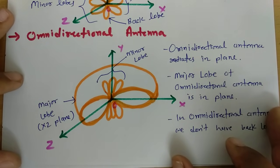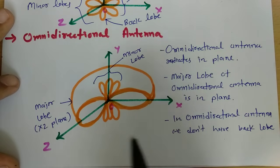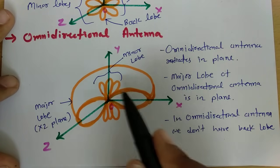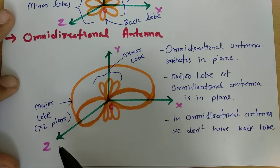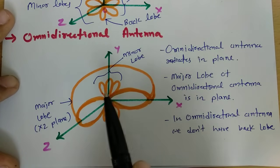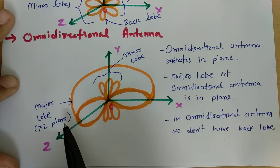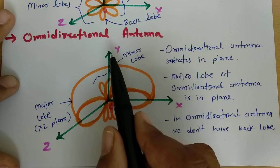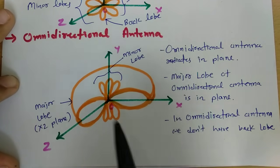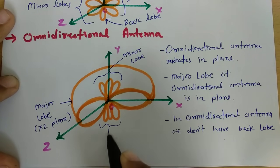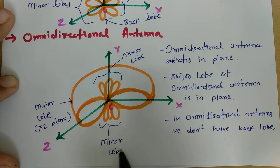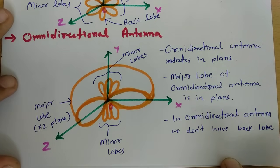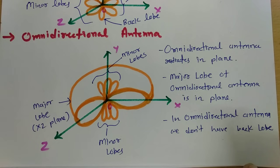When we talk about omnidirectional antenna radiation pattern, the radiation happens in a plane — it could be the XY plane, the YZ plane, or the XZ plane. Here I have considered the omnidirectional antenna radiating in the XZ plane. One can see its radiation with respect to the XZ plane: it has a major lobe in the XZ plane, and with respect to the Y-axis orientation there are minor lobes. Omnidirectional antenna does not have any back lobe. This is how the radiation pattern differs across the three categories: isotropic, directional, and omnidirectional antenna.